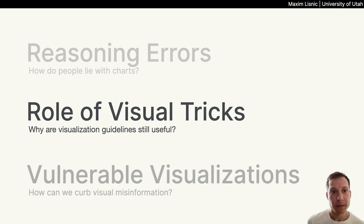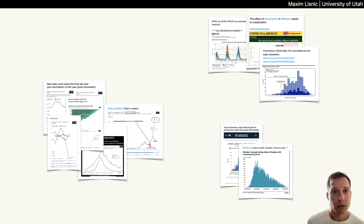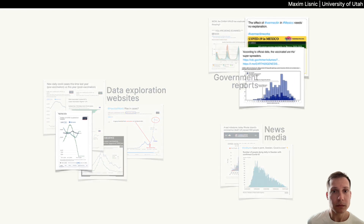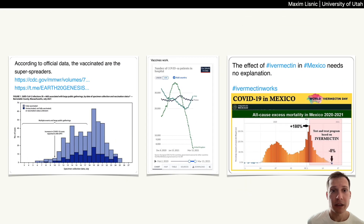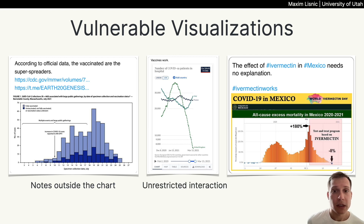So what could be done about it? You might have observed from our examples that the majority of misleading charts are screenshots from reputable sources — such as government reports, data exploration websites, or news media. Previously shown examples all contain screenshots of charts that were not intended to support any of these conclusions. Their vulnerability to misinterpretation primarily comes from having very visually salient but unexplained features, and from including warnings against misinterpretation in the limitations section where they would not survive being cropped out. In the case of data exploration websites, from offering an unrestricted set of interactions that could be interpreted by the user as the set of valid comparisons, or from annotations being added directly onto the chart with new information.